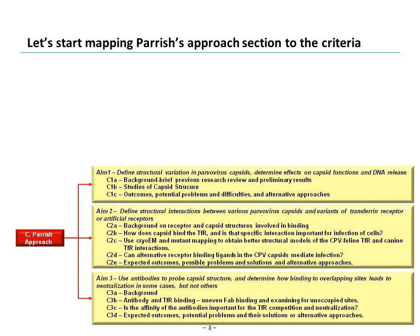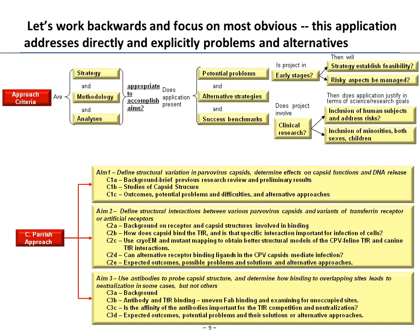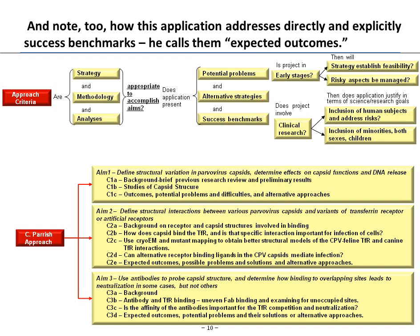Now let's start mapping Parrish's approach section to the criteria. First, working backwards to the most obvious: this application directly and explicitly addresses potential problems and alternative strategies. He addresses these criteria explicitly in every concluding section of his aims. Regarding success benchmarks, he also addresses those explicitly in his concluding sections, and throughout the application he talks about what outcomes he wants from specific experiments as he dives into scientific detail.